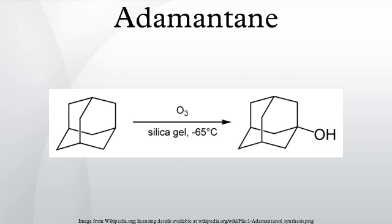Crystal structure: the Adamantane molecule consists of three condensed cyclohexane rings fused in the chair conformation. The molecular parameters were deduced by electron diffraction and X-ray crystallography. The carbon–carbon bond length is 1.54 Å, almost identical to that of diamond, and the carbon–hydrogen distance is 1.112 Å. At ambient conditions, Adamantane crystallizes in a face-centered cubic structure containing orientationally disordered molecules. This structure transforms into an ordered body-centered tetragonal phase with two molecules per cell either upon cooling to 208 K or pressurizing to above 0.5 GPa.